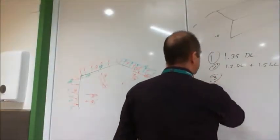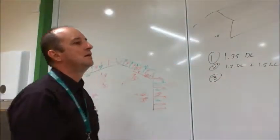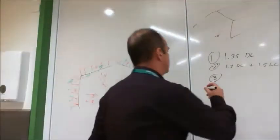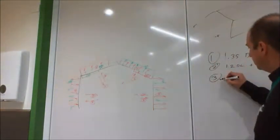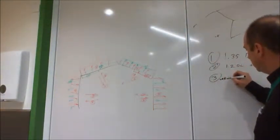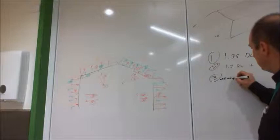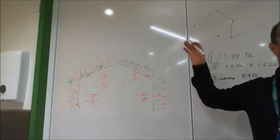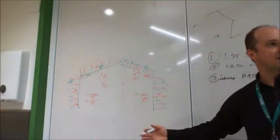Load combination three. Then let's talk about a west wind. And so I'll label it west wind uplift. So for that one, we go 0.9 times the dead load because when we're considering an uplift, we underestimate the dead load slightly.